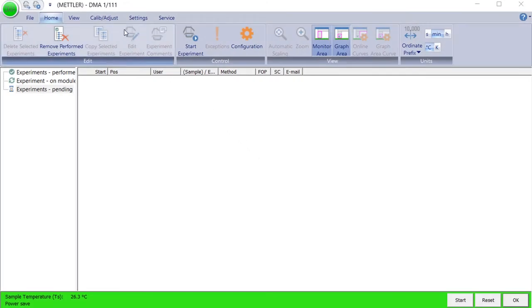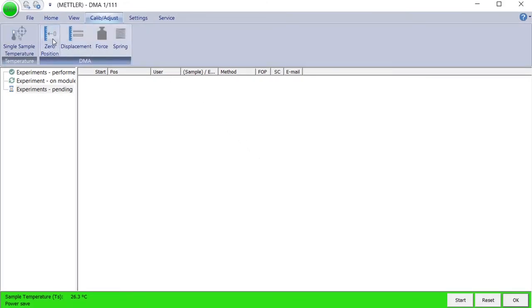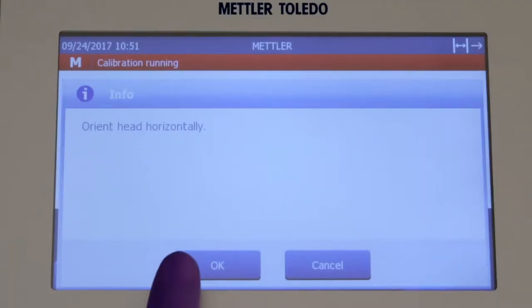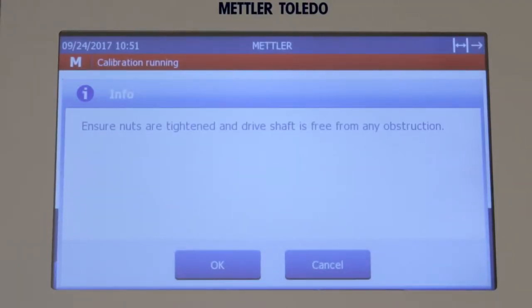In the module control window of the software, start the adjustment by clicking Zero Position Adjustment on the Calibration Adjust menu. Click Yes and follow the instructions on the DMA1 display. Tap OK for the instruction info.